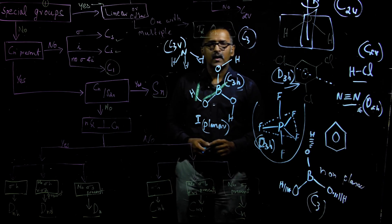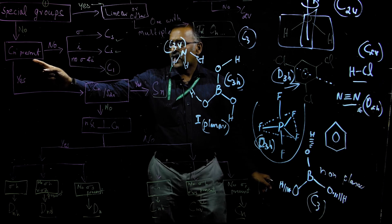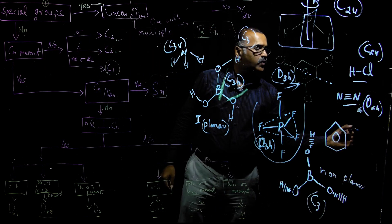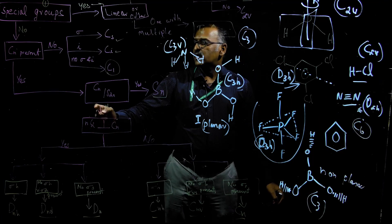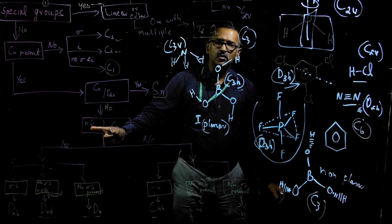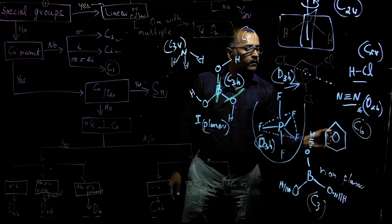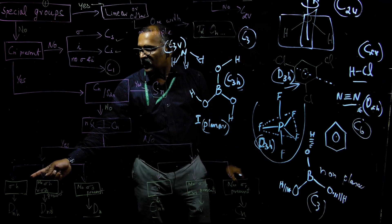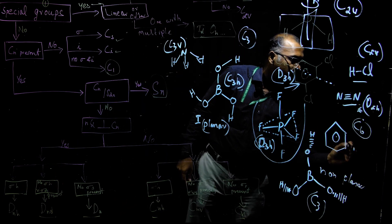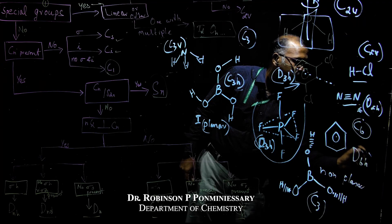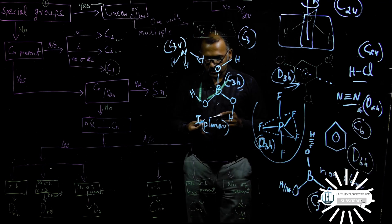Finally, benzene. It is not a special group. The principal axis is C6. Checking for nC2 axes perpendicular to the C6 axis — there are six such C2 axes. Since benzene is a planar molecule, it has a sigma H plane. Therefore the point group of benzene is D6H. In this way, you can determine the point group of any molecule by following this flowchart.